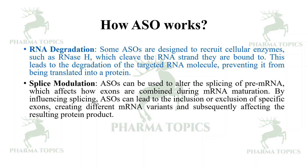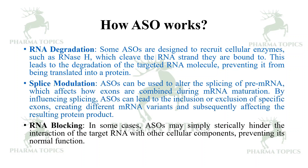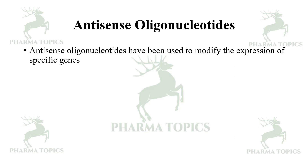Splice modulation: antisense oligonucleotides can be used to alter the splicing of pre-mRNA, affecting how exons are combined during mRNA maturation. By influencing splicing, they can lead to inclusion or exclusion of specific exons, creating different mRNA variants and affecting the resulting protein product. RNA blocking: antisense oligonucleotides may also sterically hinder the interaction of target RNA with other cellular components, preventing its normal function.